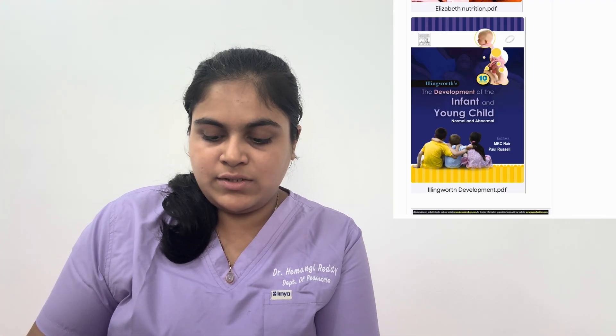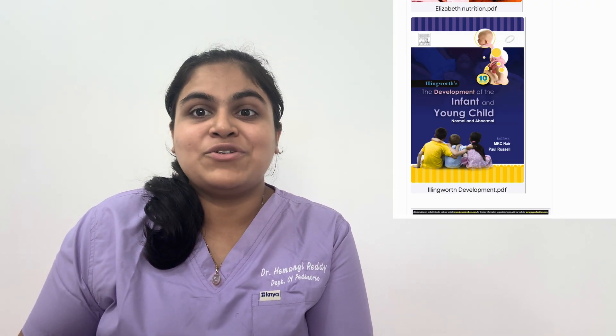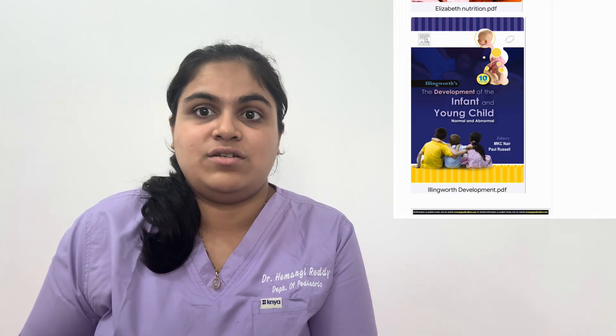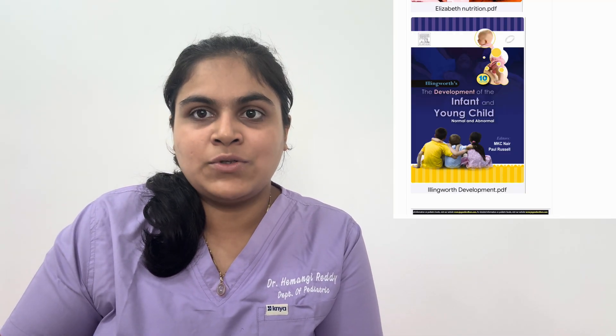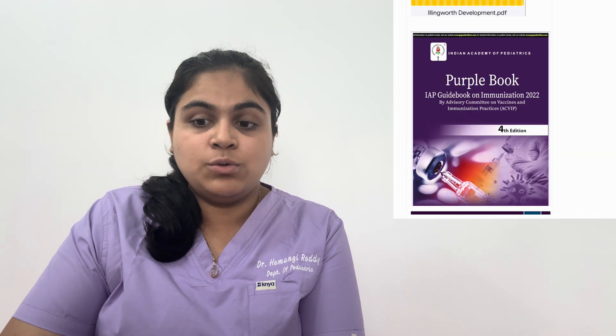For the growth and development aspect, there is Linguist's Development of the Infant and Young Child: Normal and Abnormal. It's the best book — content is in pictured form. Finish reading it in the first year during OPD or PICU postings. I've read this book five to six times; each time, make a flow chart or diagrammatic presentation. I would prefer this book a million times over any other for growth and development.